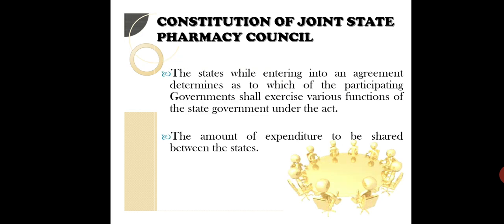What are the functions of the joint council? The states, while entering into an agreement, determine which of the participating governments shall exercise various functions of the state government under the act, and the amount of expenditure to be shared between the states. All these points are decided before the council becomes functional.